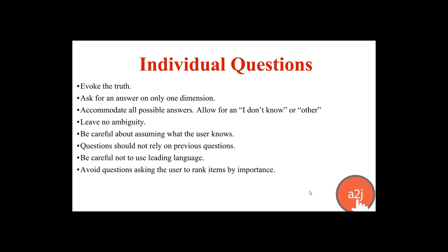For example, if you have to ask a series of questions about children and need information one child at a time, remind the end user which child they're talking about. 'What is the name of your first child?' — It's Bobby. The next question says 'What is Bobby's date of birth? Who is Bobby's father? What is Bobby's address?' This reminds your end user of what they've said before. Be careful not to use leading language, and always avoid questions that ask users to rank items by importance because that's very subjective.